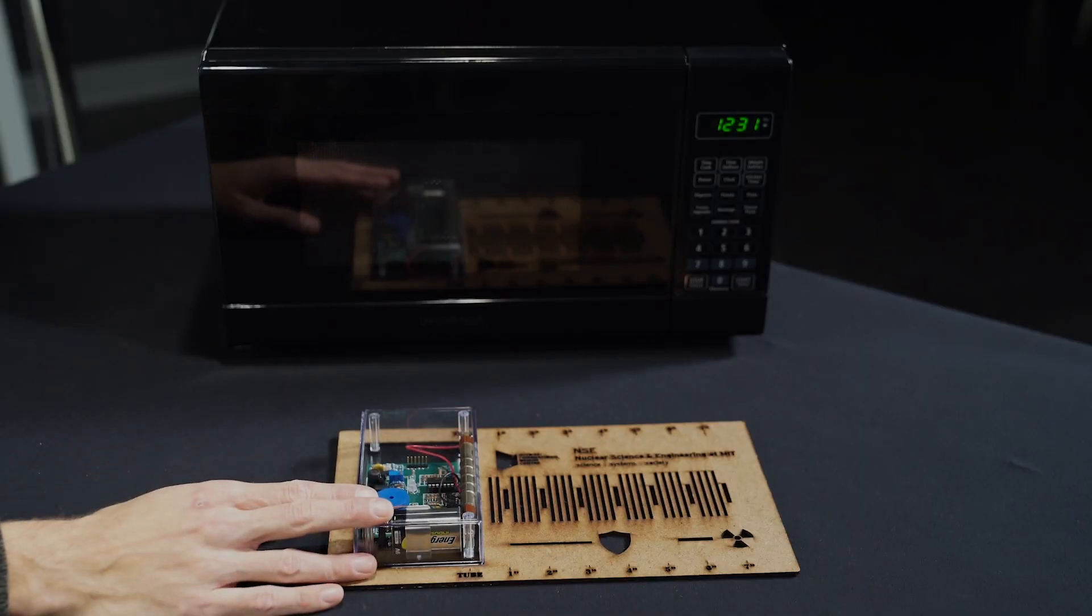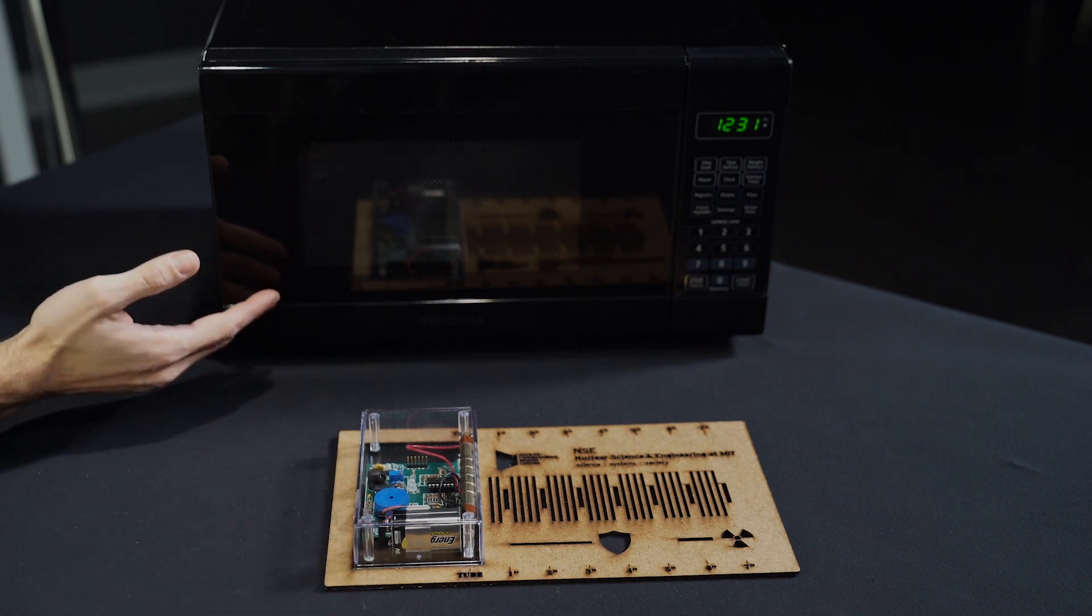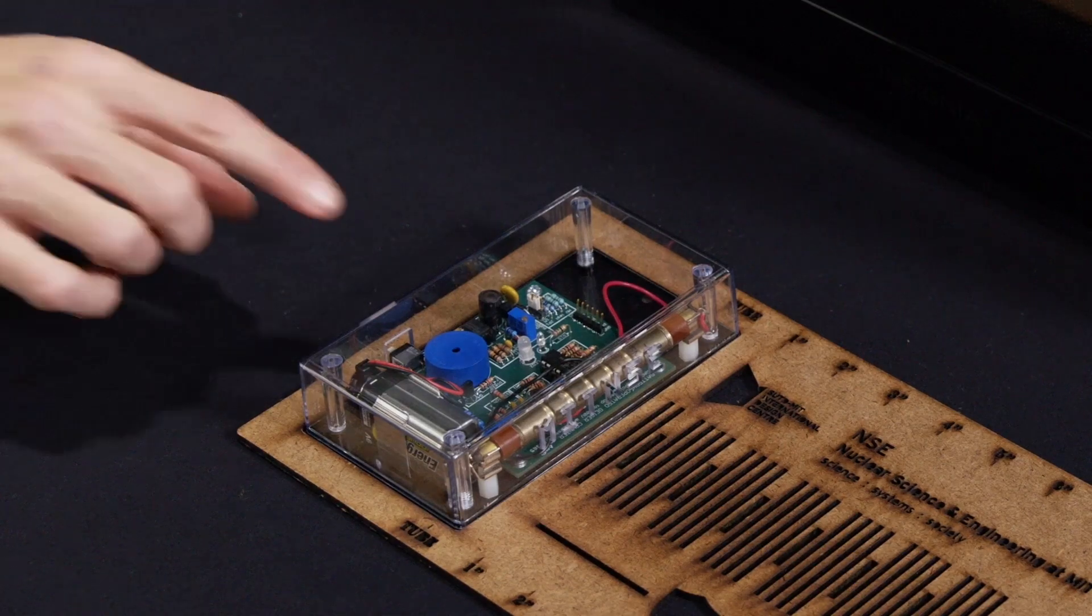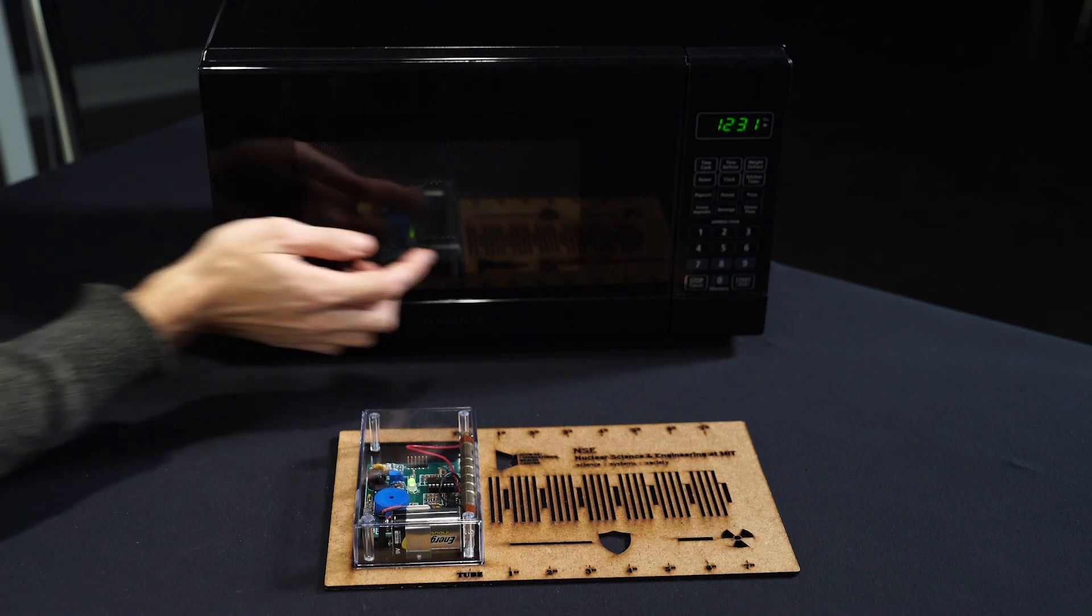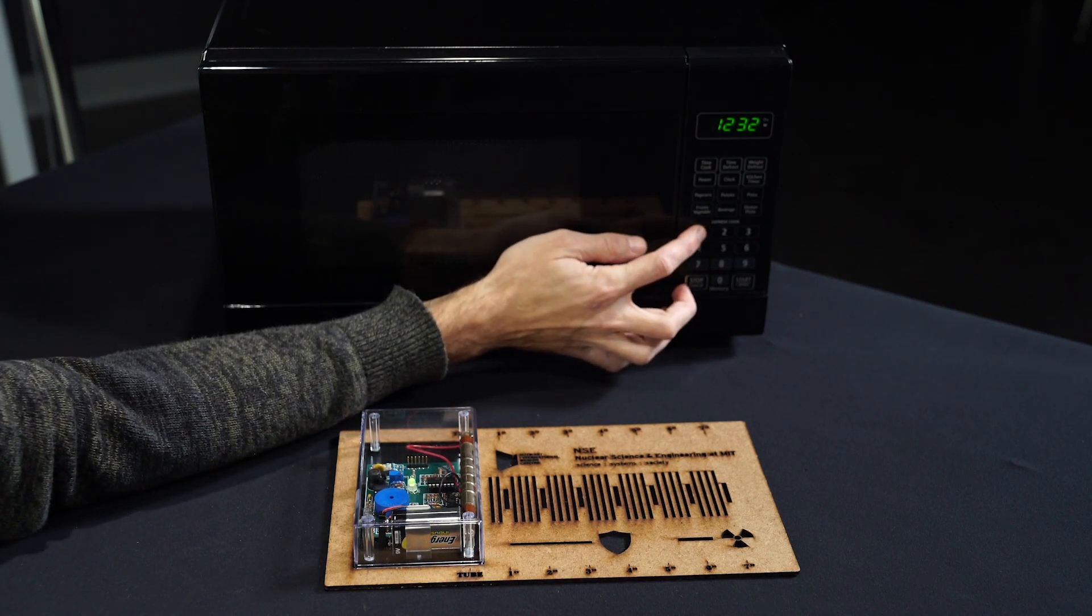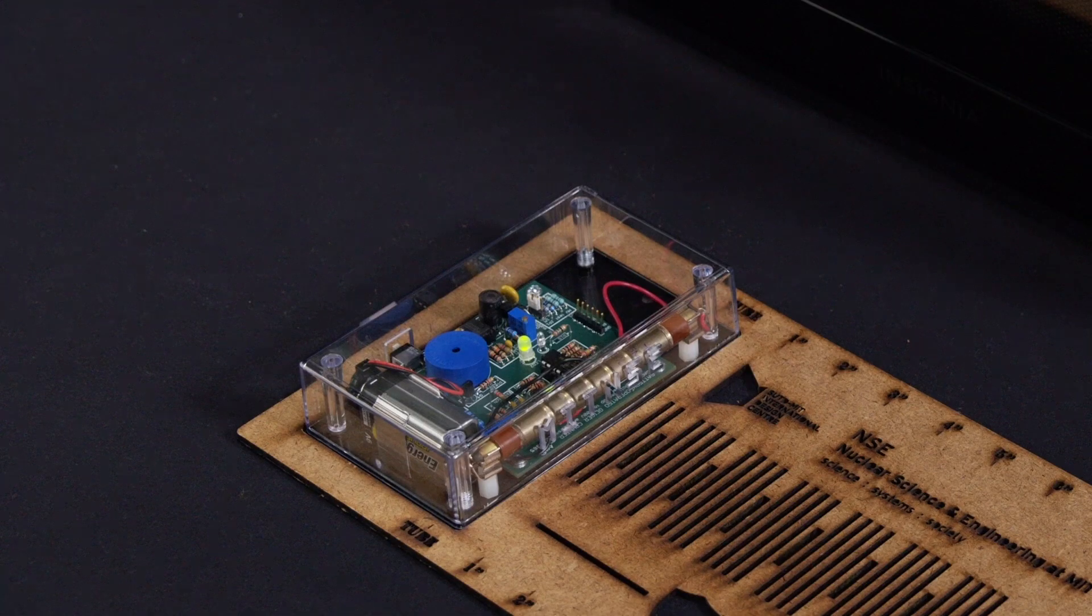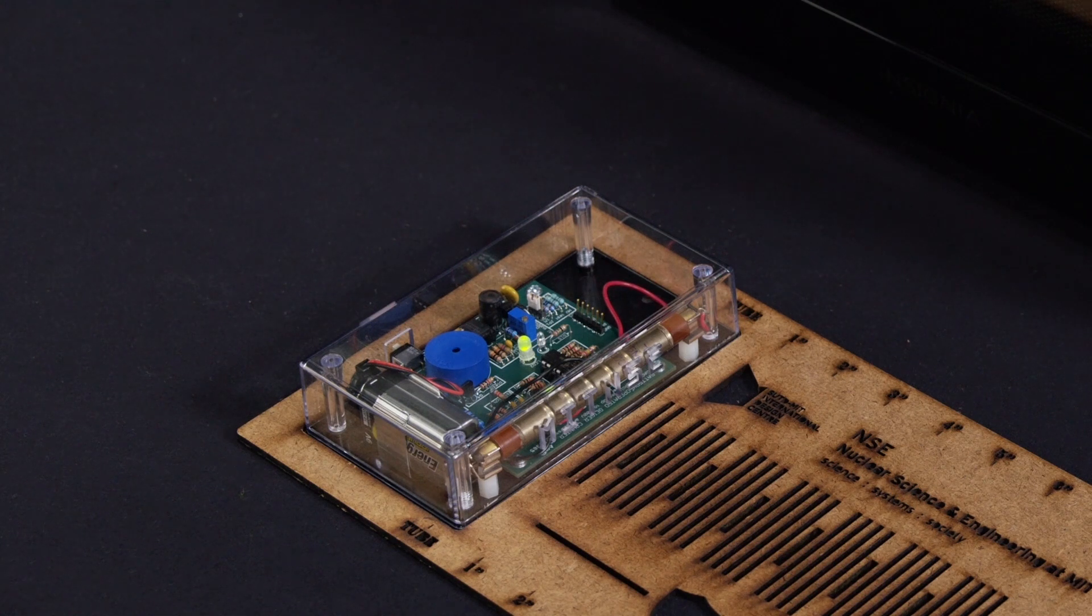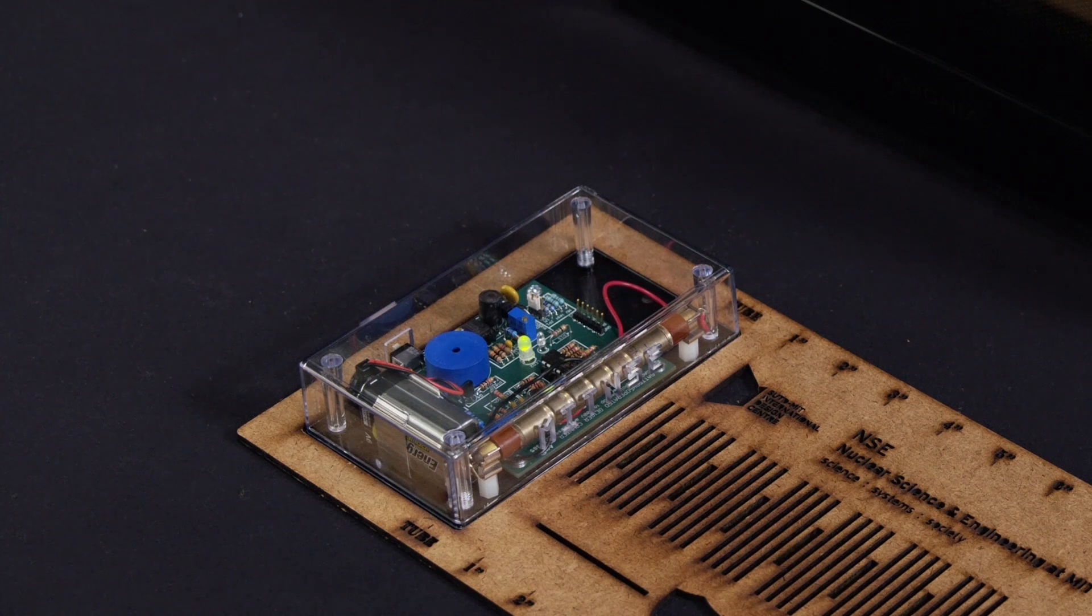So here we have a trusty Geiger counter, and here we have a microwave oven. We're going to turn them on at the same time. And even though the microwave is going to get loud, we can watch the blue light on the Geiger counter as an indicator of the number of ionizing radiation events that we detect. So here we go. Let's turn the microwave on and see if we get more clicks or beeps when the microwave is going. Despite the fact that the microwave is producing microwave radiation, not ionizing radiation, we don't see any extra clicks and the Geiger counter is not indicating any additional ionizing radiation.